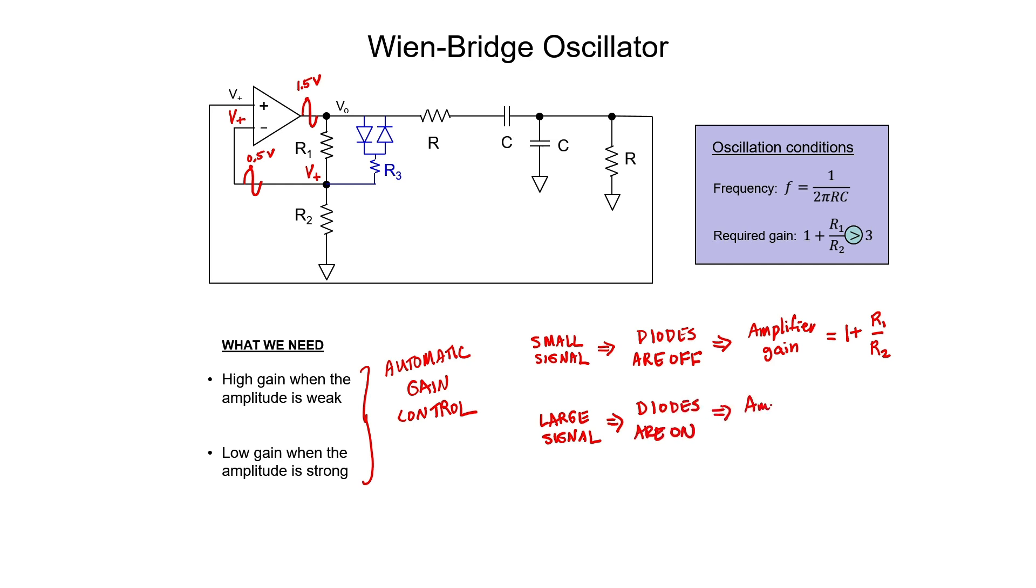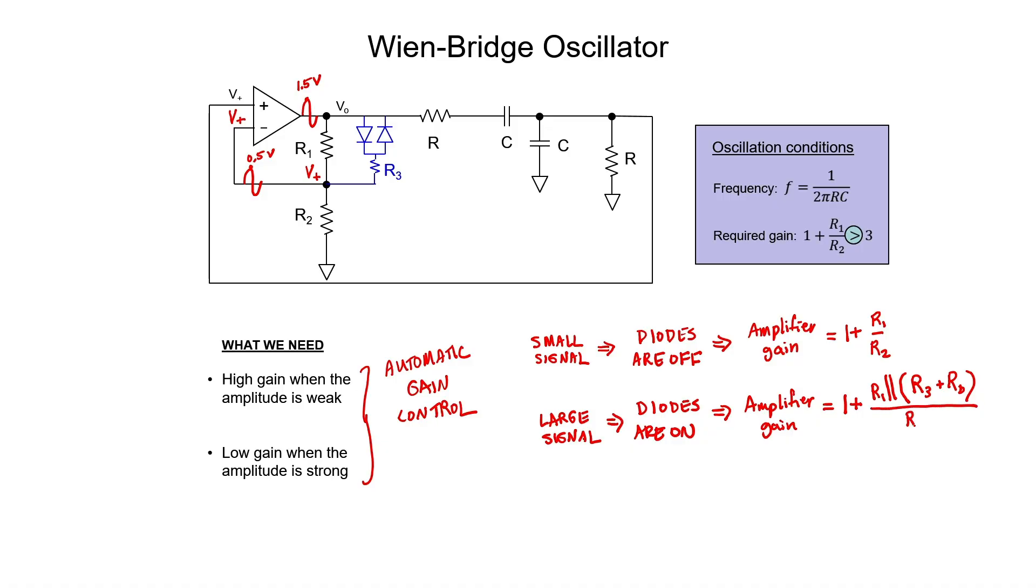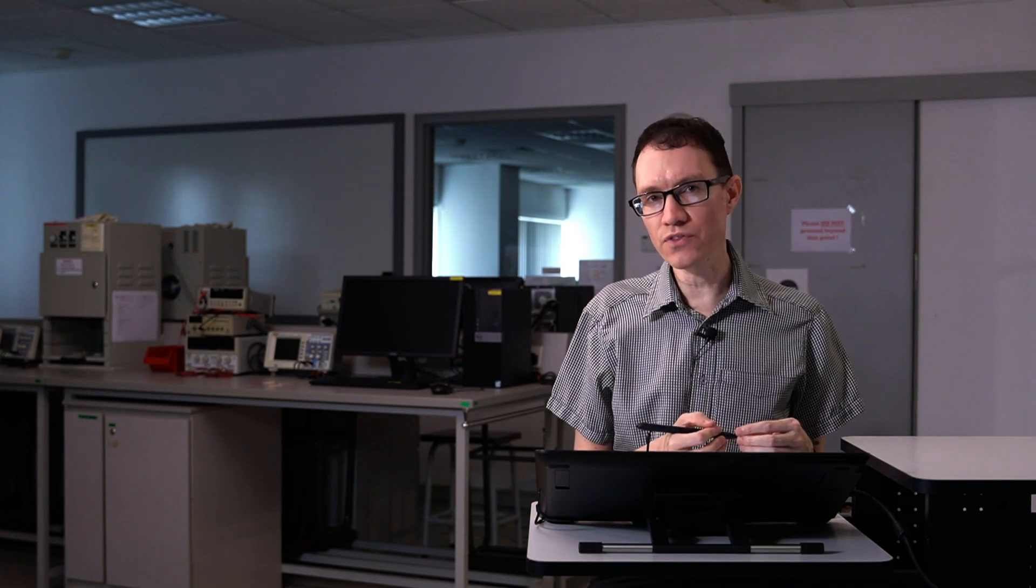When the diodes turn on, the gain of our amplifier is altered. The resistor R1 is now in parallel with the resistance of the new network that we've added. Let's call the resistance of one of those diodes R sub D. And the reason why I don't have a 2 in front of that is because only one diode will be on at a time. We have two expressions for the amplifier gain. Which one is larger? Well, when you put a resistor in parallel with anything, the effective resistance goes down. Therefore, the amplifier gain is reduced in the second expression. This is exactly what we set out to do. We can control the gain when the diodes are on by adjusting the value of R sub 3.